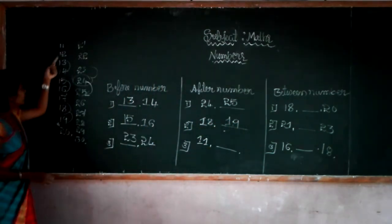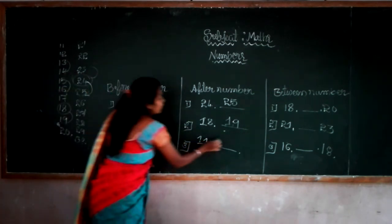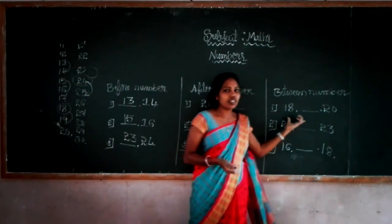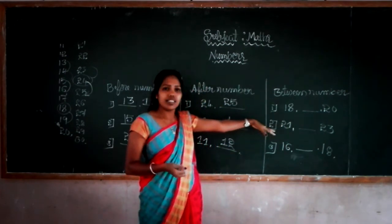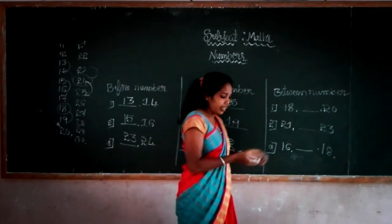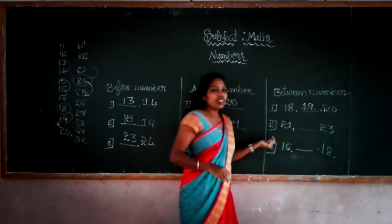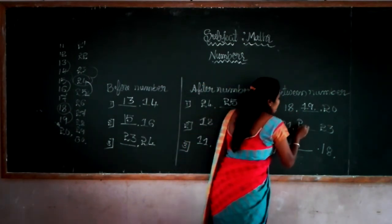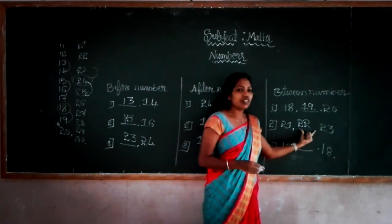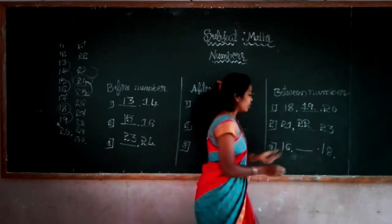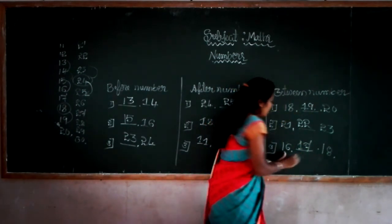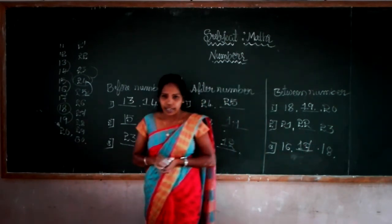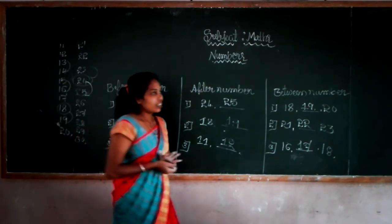The after number of 11 is 12. For between numbers: the between number of 18 and 20 is 19. The between number of 21 and 23 is 22. The between number of 16 and 18 is 17.